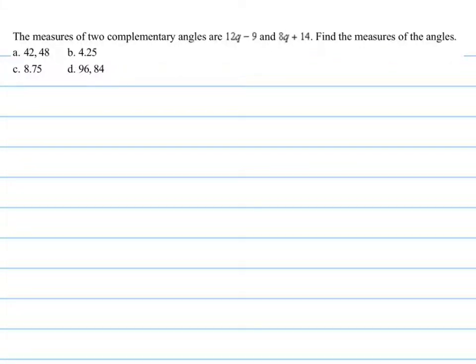This question says the measure of two complementary angles are 12q-9 and 8q-14. So we have two complementary angles. That means that those two angles, I'll just draw a picture so you can understand it, those two angles make up a right angle right here.